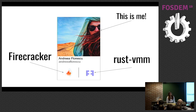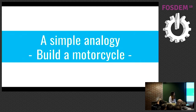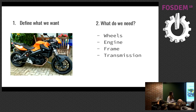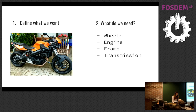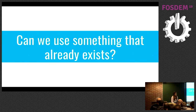Before getting into details about what either of these things are, let me start with a simple analogy. Let's say that we want to build a motorcycle. The first step is to gather the requirements and get a clear idea of what we want to build. Next, we break it into tasks and think about the components we need. But we soon realize this is going to take a lot of time — so can we use something that already exists? And the answer is yes.